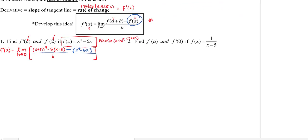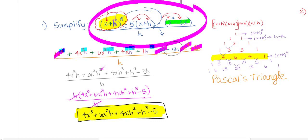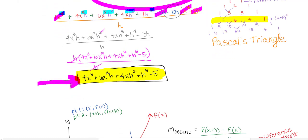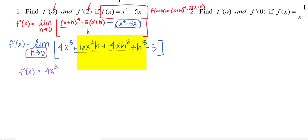This is exactly the problem we did in the previous video, just with the limit in front. So I'm going to copy the simplified polynomial from that work. Now I've removed the discontinuity, so I substitute 0 in for h. f prime of x equals 4x cubed — the terms with h go to 0, since I have 0 times 6x squared, 0 times 4x, and 0 cubed. Don't forget your minus 5 at the end.